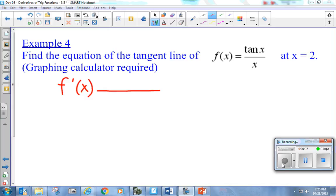So, low times the derivative of high. What is the derivative of tan? Secant squared. Low d high minus high, tan of x, d low. What's the derivative of x? Just one. Draw a line and square below.